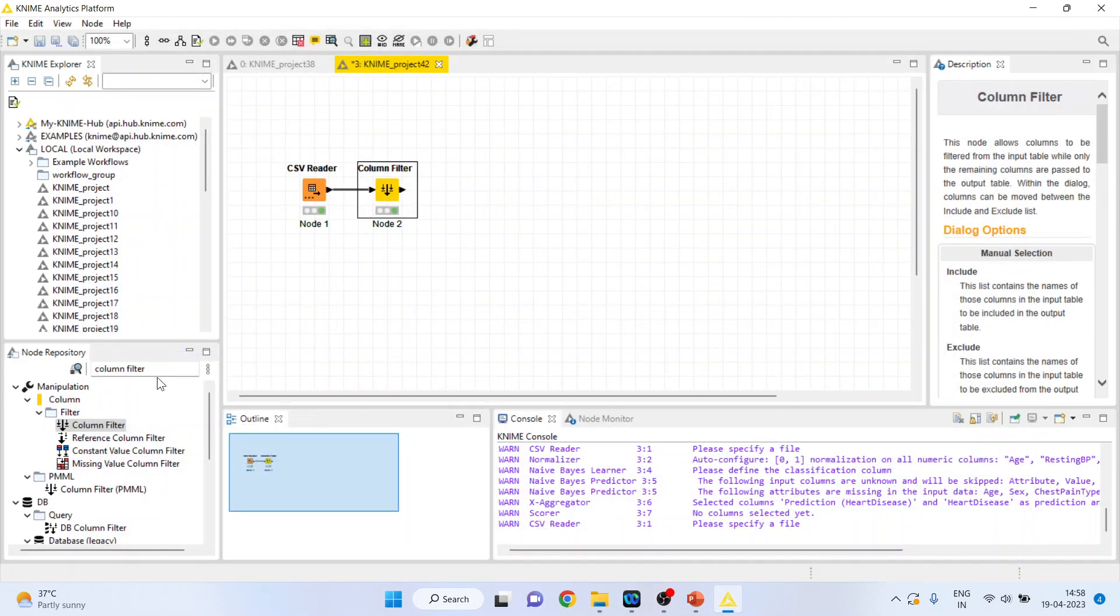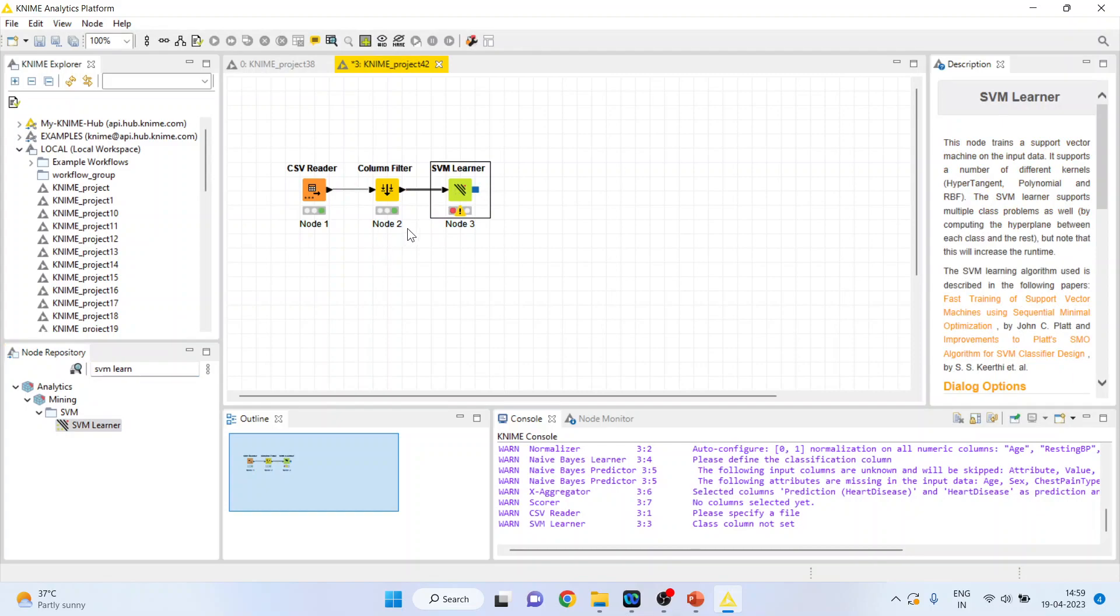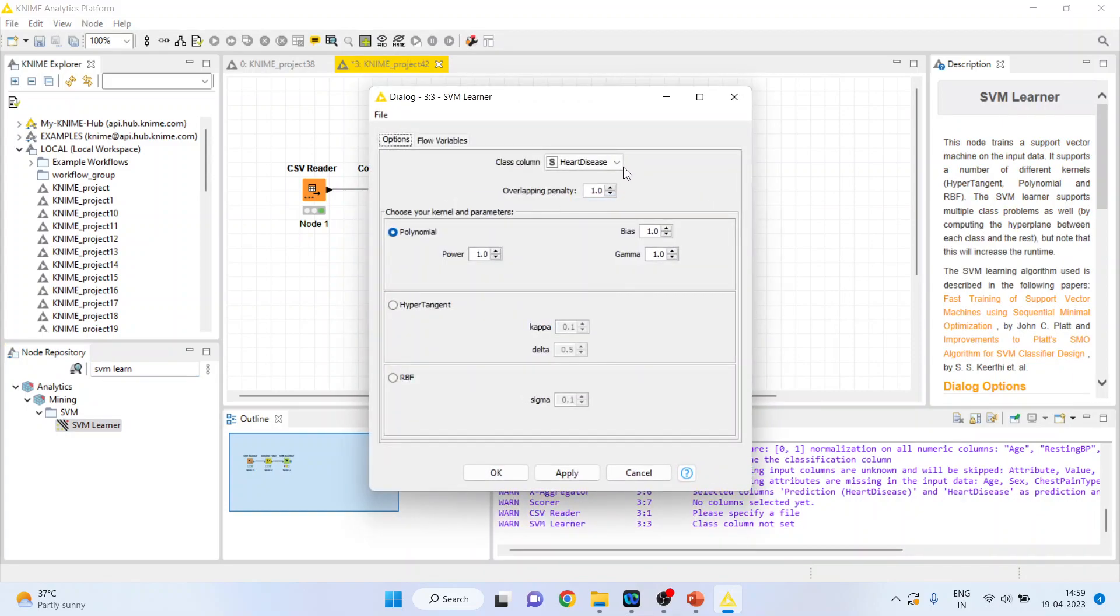Now activate SVM learner from here. Right click on it and configure. Make sure that the heart disease is on. So these are the kernels.